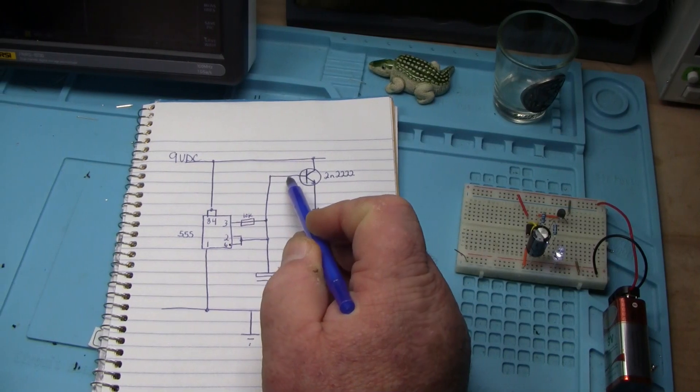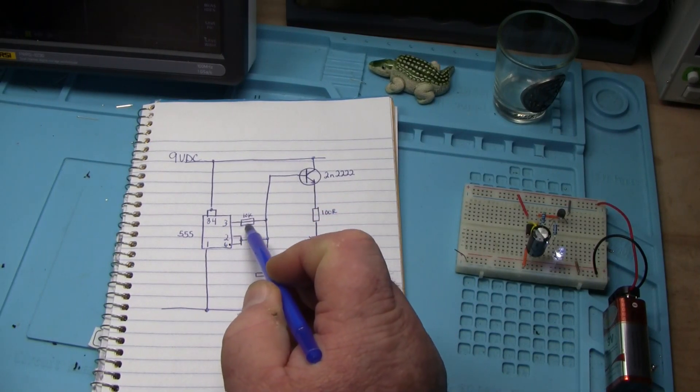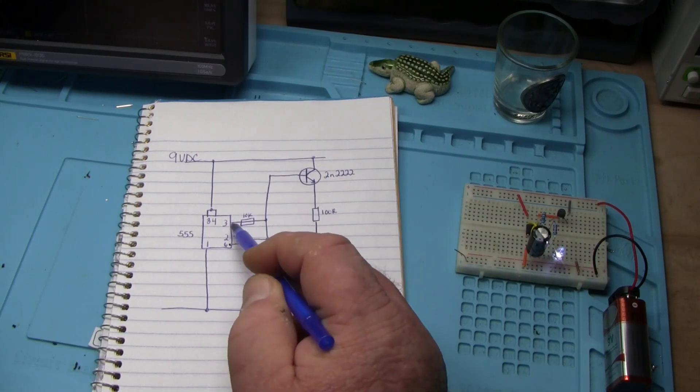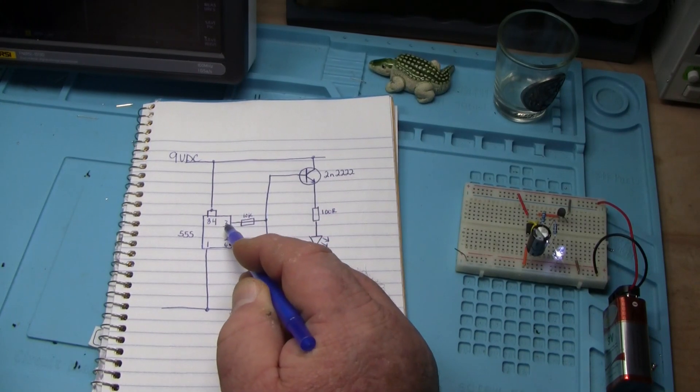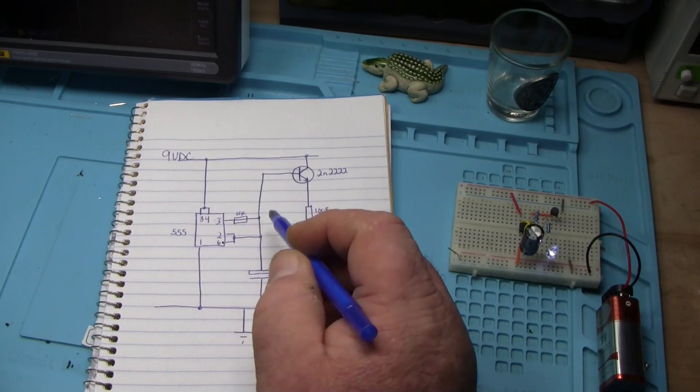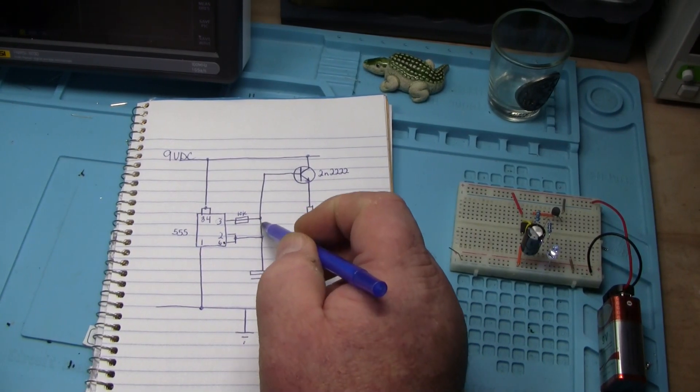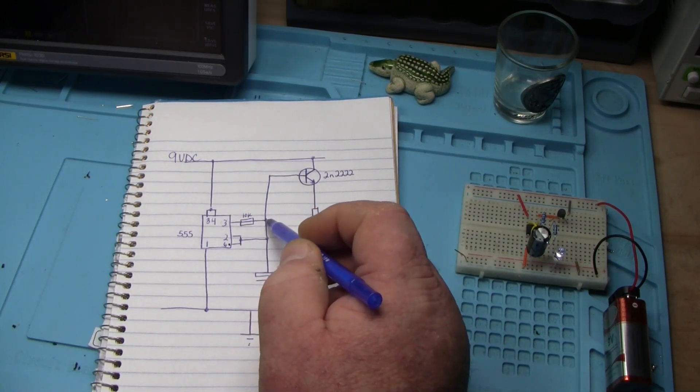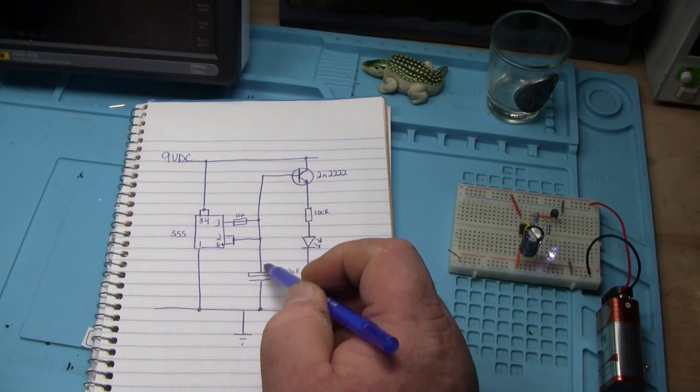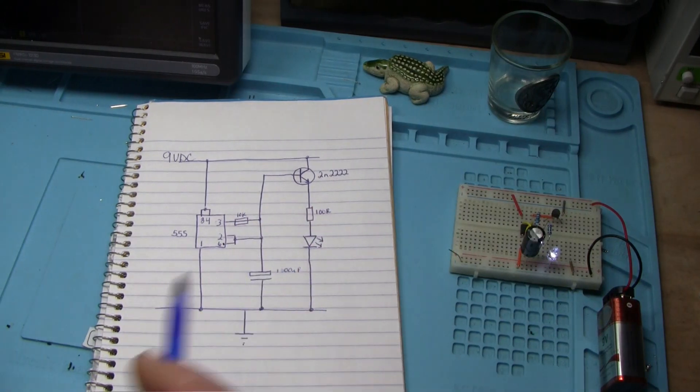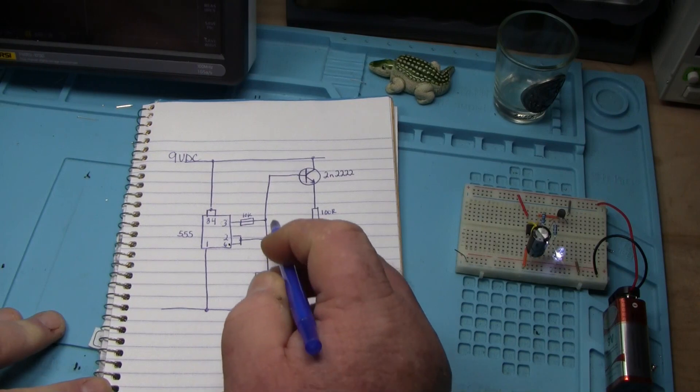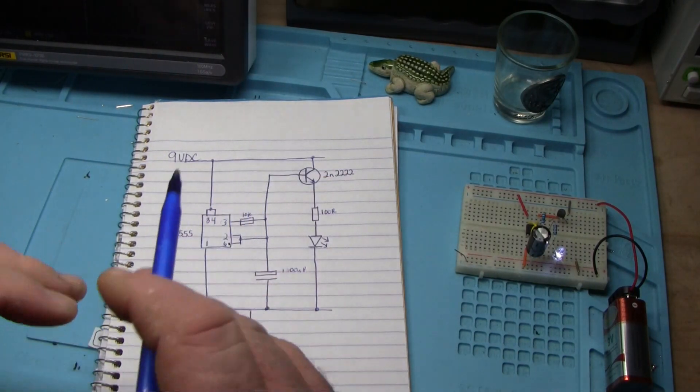The base of the transistor connects through this 10K current limiting resistor to the output pin 3 of the 555 timer, but it also connects to the capacitor, so when that goes high, we're getting a voltage charge also into that capacitor. When it goes low, the capacitor will discharge, and we'll get that nice slow ramp up and down.